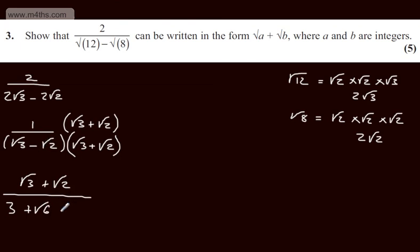We will then have minus root 6. And then finally, root 2 times by root 2 is 2, so we're going to have minus 2. These two terms are going to cancel, so we end up with root 3 plus root 2 over 3 minus 2, which is 1.